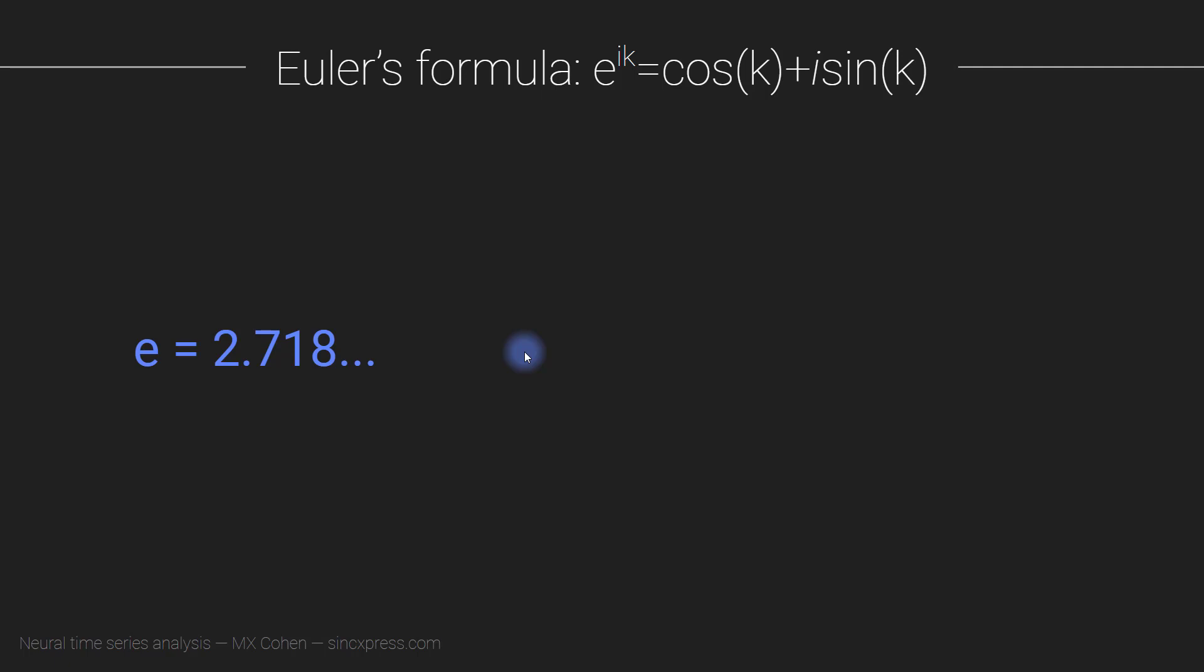So what is this thing? Well, we can generate a function that is e to the x for various values of x, and that function is going to look something like this. This is a pretty famous function, e to the x.